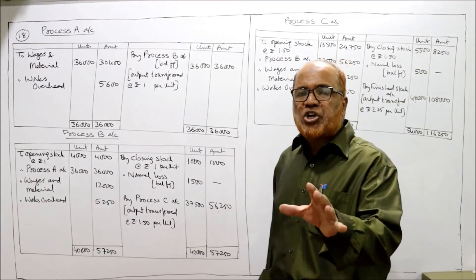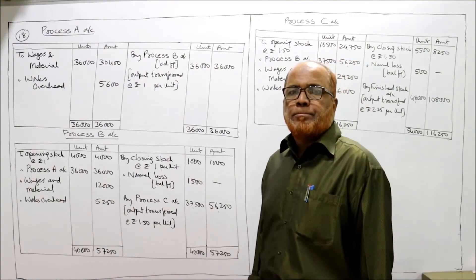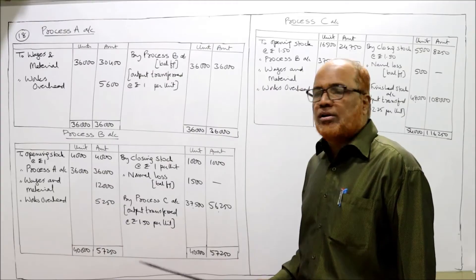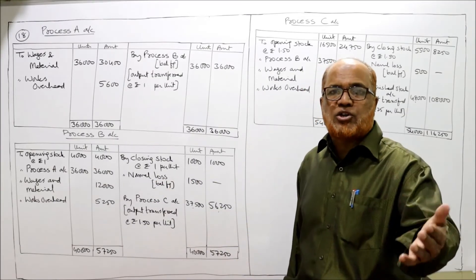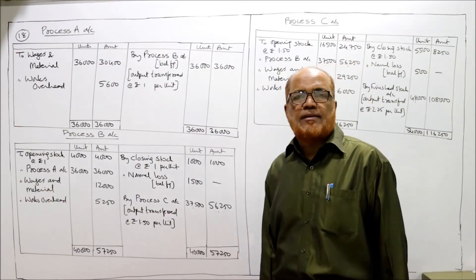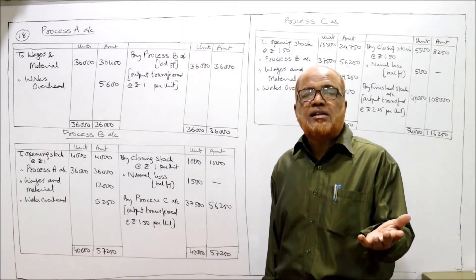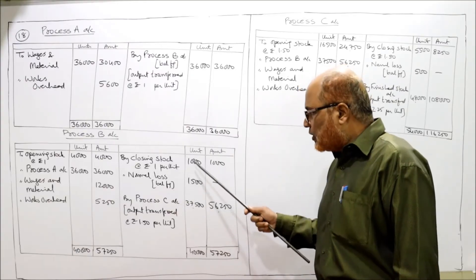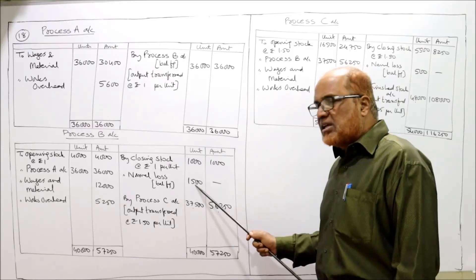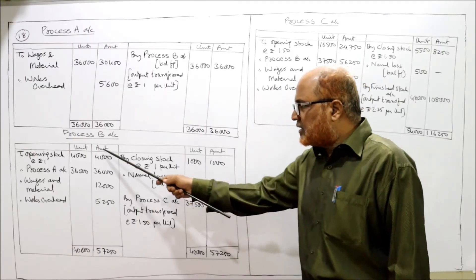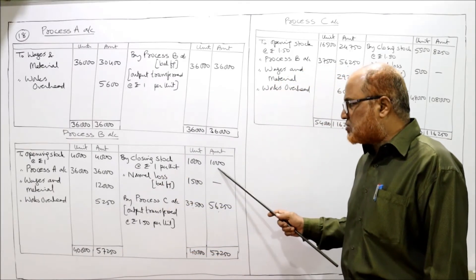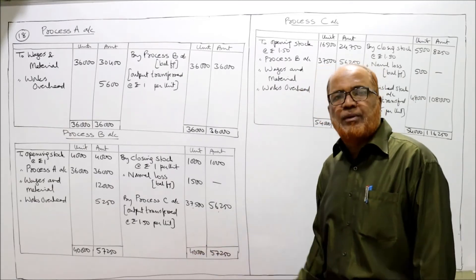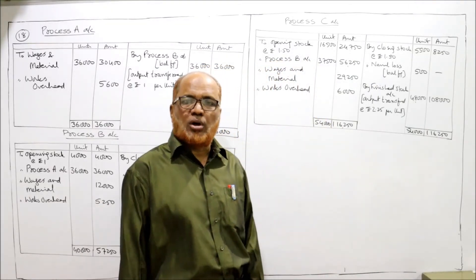Production in process B is given as 37,500. Total input was 4,000 plus 36,000 equals 40,000. Minus closing stock of 1,000 means 39,000 should have been the production, but only 37,500 is given. The remaining 1,500 units is therefore the normal loss — a balancing figure, no scrap value. Both sides equal 40,000 units. Output transferred to process C: 37,500 units. Debit side total 57,250 minus closing stock 1,000 equals 56,250. So 56,250 divided by 37,500 gives 1 rupee 50 paise per unit — the cost per unit in process B. This will be used to value opening and closing stock of process C.